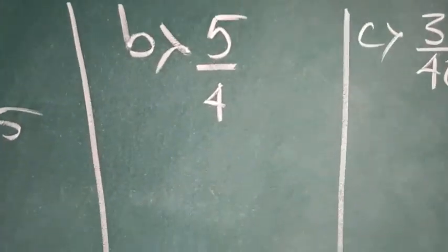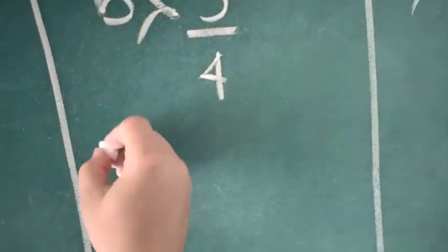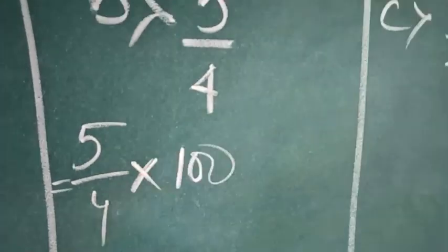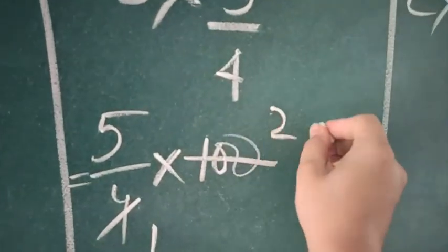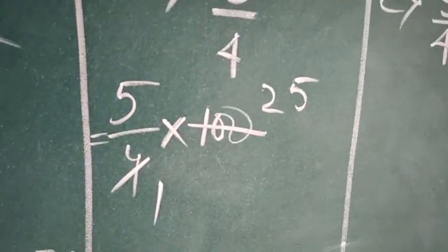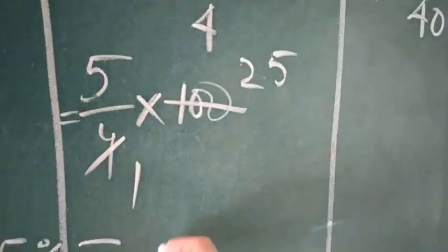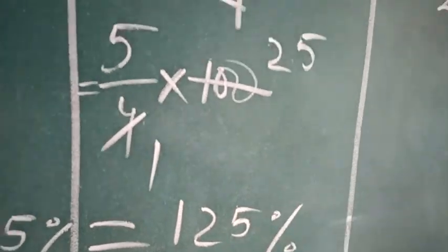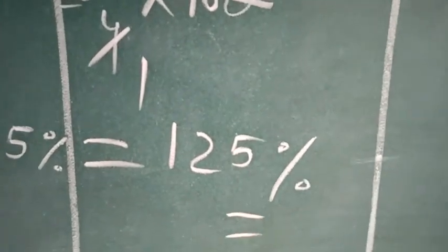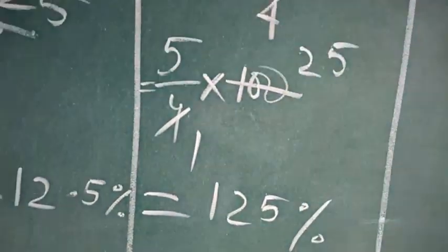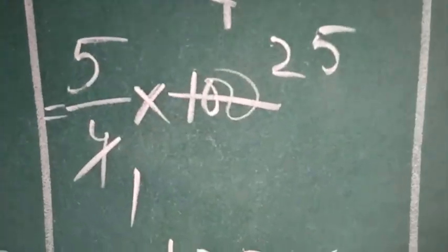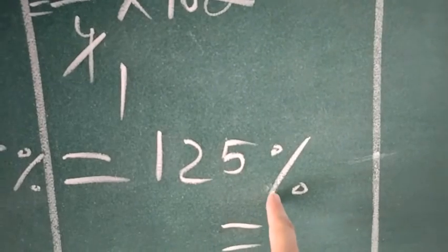Proceeding to part B, as I have mentioned, any number, whatever is the number, multiply with 100. Now 4 1s are 4, 4 25s are 100. So now when you multiply this, 5 into 25 is 125. Don't forget to put this percentage sign because you are converting into percentage. It is very important whenever the question asks to convert into percentage.